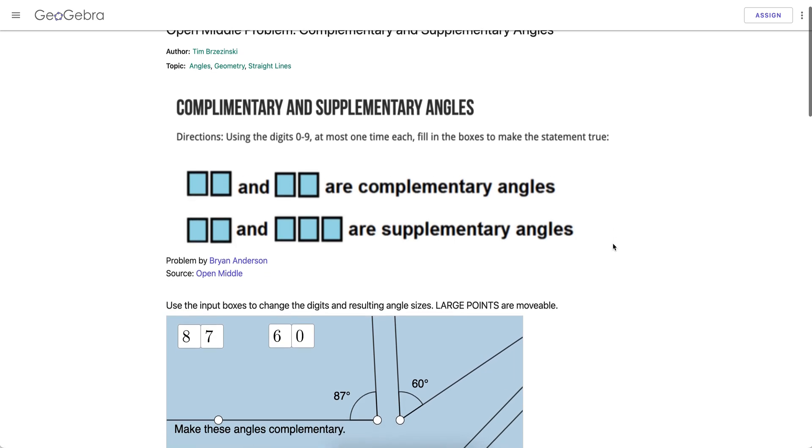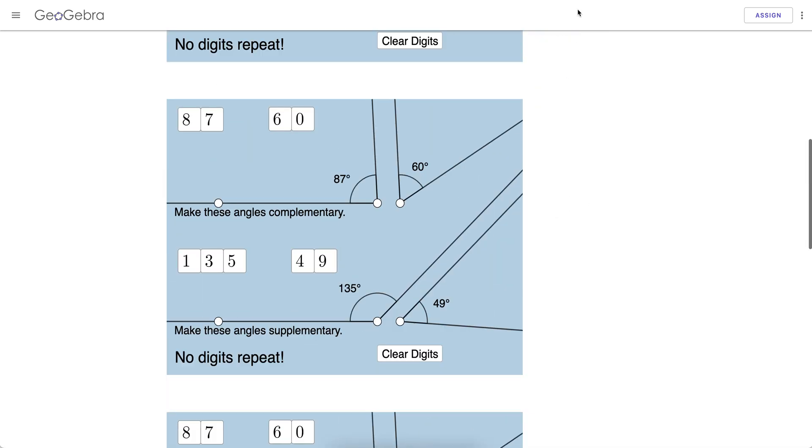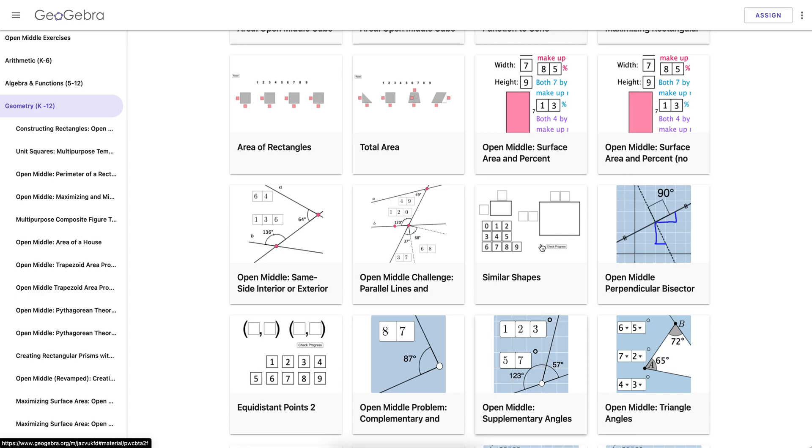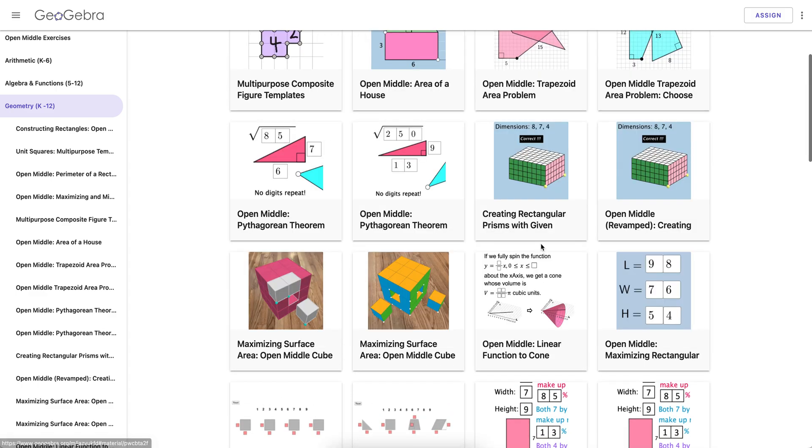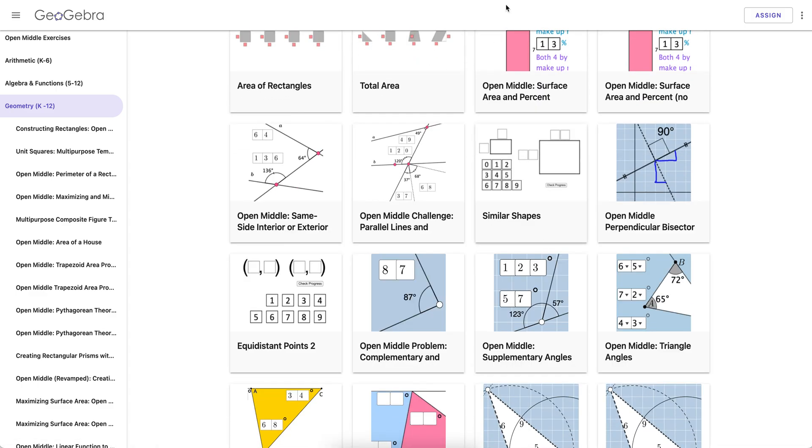So right here, I have a GeoGebra activity. Right here, I have what we call a GeoGebra book. A book is a collection of activities. It has more than one. It has multiple.